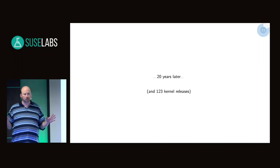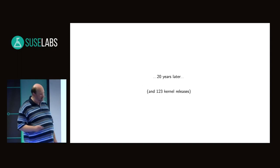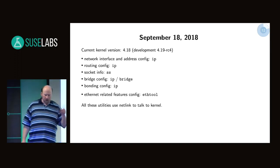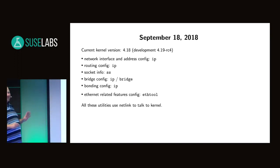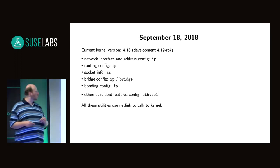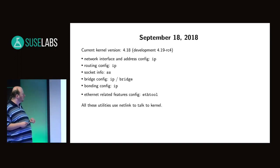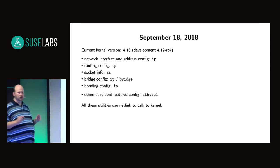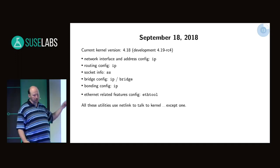Now let's move 20 years later to 2018 and 123 kernel releases. Current kernel version is 4.18. We are using utilities mostly from the iproute2 package, except for ethtool, which is still with us. But all these utilities are using Netlink — except one, ethtool, which I'm going to talk about.